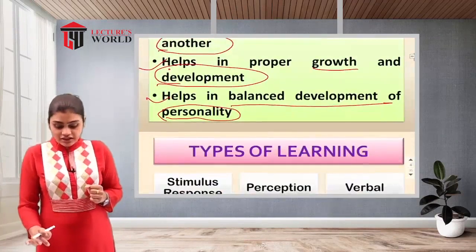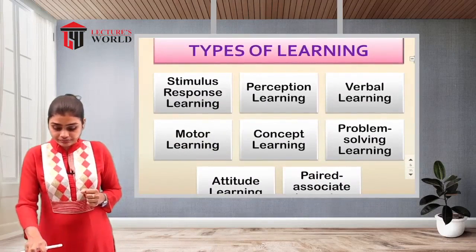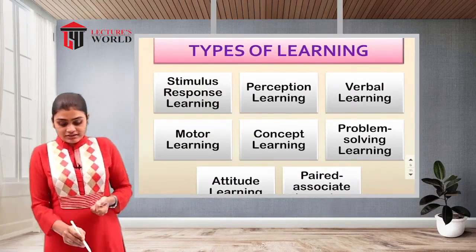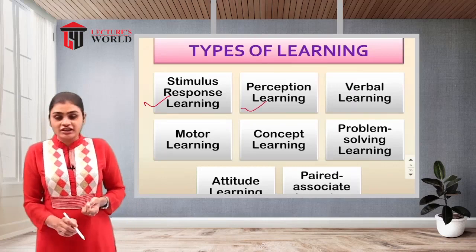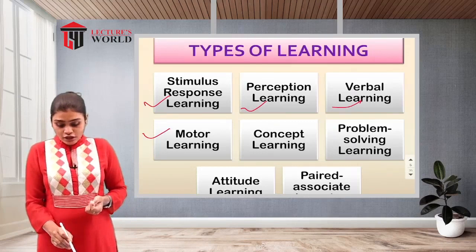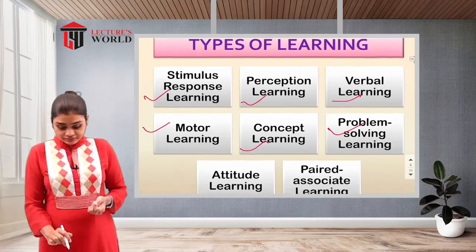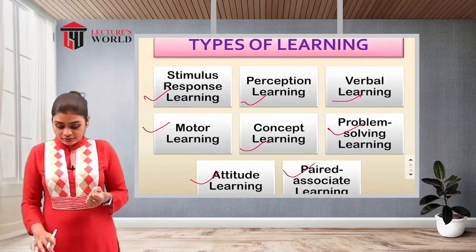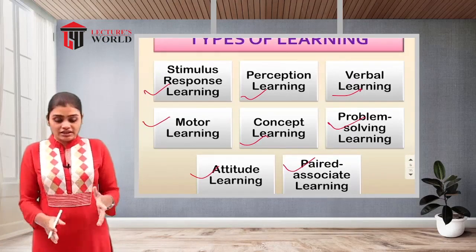After the nature of learning, we have the types of learning. The different types are: stimulus-response learning, perception learning, verbal learning, motor learning, concept learning, problem-solving learning, attitude learning, and paired associate learning. These are the different types of learning, and we are going to see all these types one by one in detail.